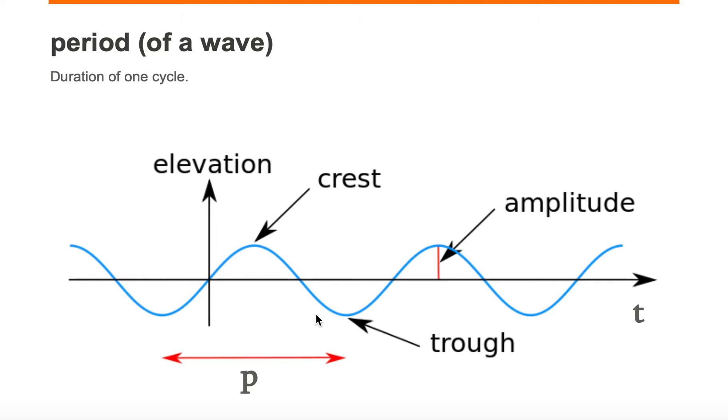Here we're looking at a wave, and notice that it continuously repeats. It goes from a trough to a peak or crest, back to a trough, back to a crest, back to a trough, back to a crest. So the cycle is where it starts to repeat.